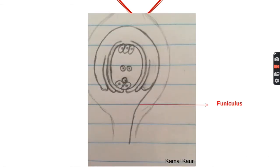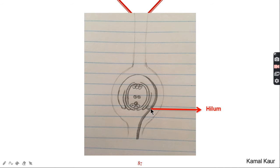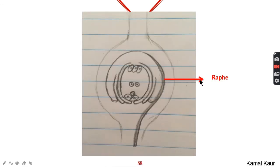Ovule is attached to the base of the flower with the help of a stalk like structure called funiculus. We will thicken the funiculus. The attachment of funiculus to the ovule is here but it does not stop here. It extends itself all along the ovule to secure its connection. The point where funiculus attaches itself to the ovule is called hilum and this extension is called raphae.